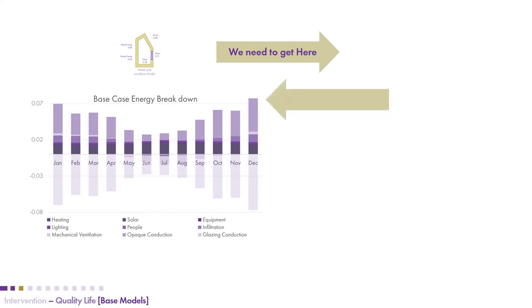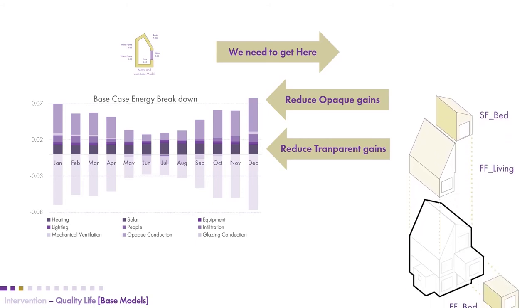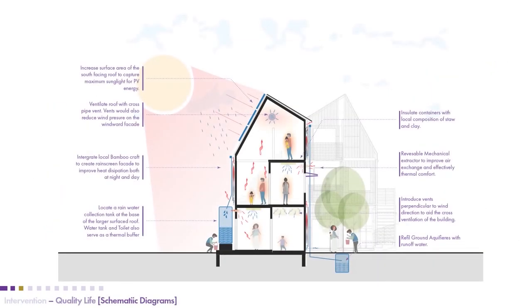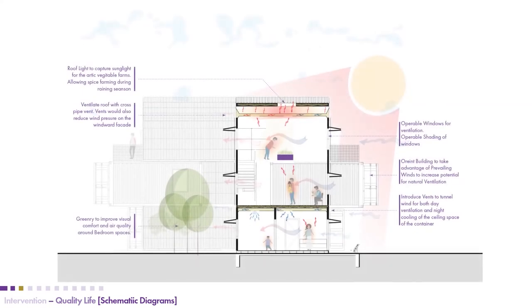Before benchmarking the building we first developed a schematic design to understand the big overview of everything we wanted to achieve within the building. With that in place, we started looking at improvements systematically. Insulating the building was the first step.